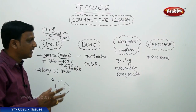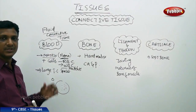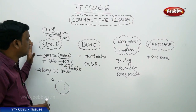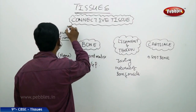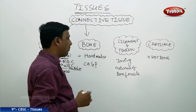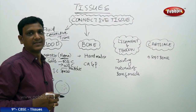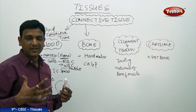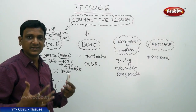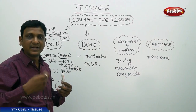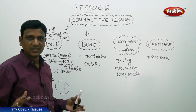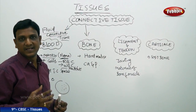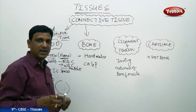Blood also plays roles in immunity and other functions, but transportation is the primary function. The second connective tissue is bone. Bone is a hard tissue that gives mechanical strength and gives a shape to our body framework — the skeleton. We have a frame of bones inside our muscles, and the bones give a specific shape.